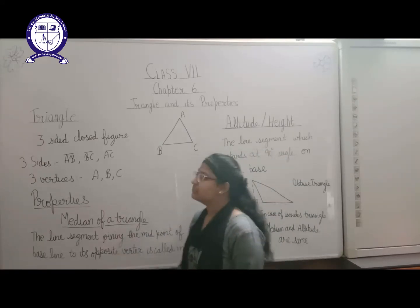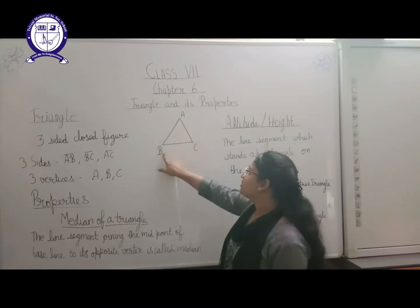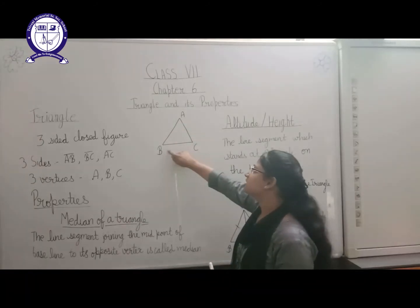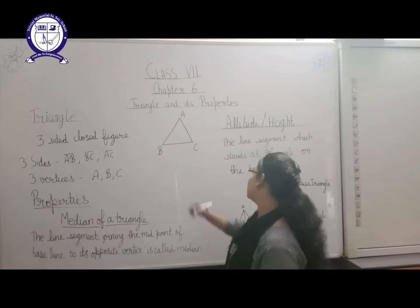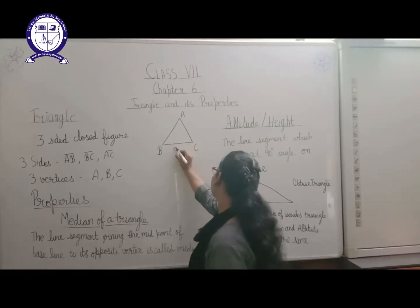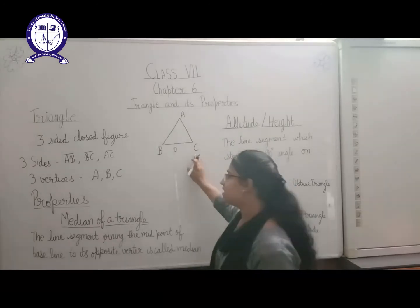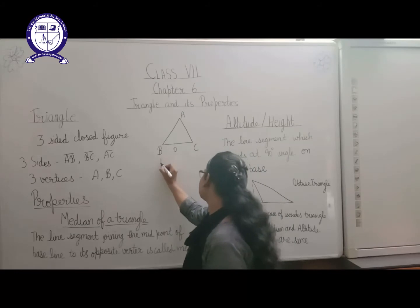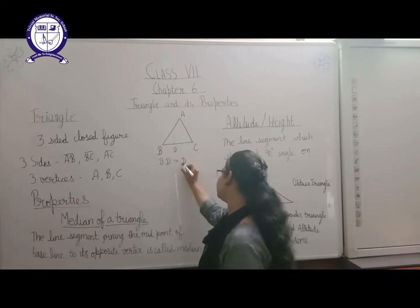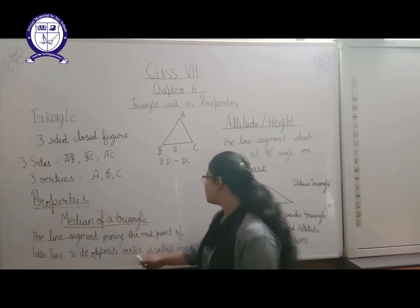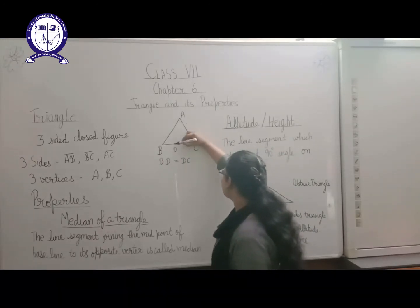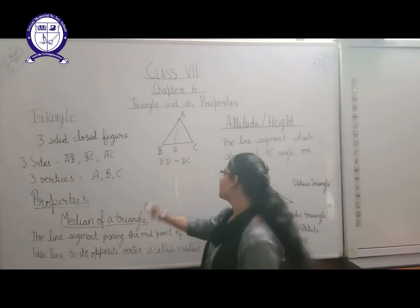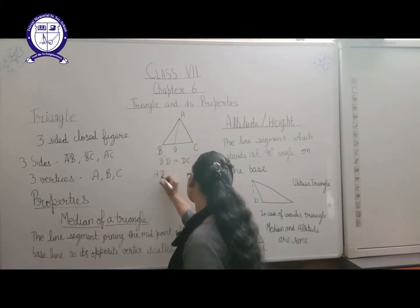First of all we need to know the baseline. Taking triangle ABC, the baseline is BC. Suppose D is the midpoint of baseline BC, meaning BD is equal to DC. The opposite vertex of baseline BC is A. So if we join this midpoint D to the opposite vertex A, we get the Median. So here AD is the Median.